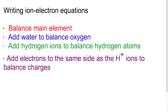If you need to write an ion-electron equation from scratch, these are the steps to follow. Step one: balance the main element. Step two: add water to balance any oxygen present. Step three: add hydrogen ions to balance any hydrogen atoms. Step four: add electrons to the same side as the H⁺ ions to balance any charges present.